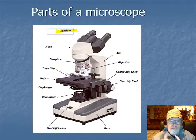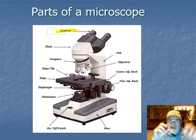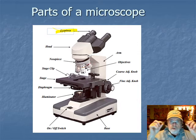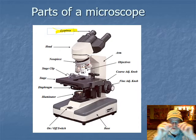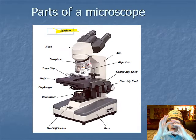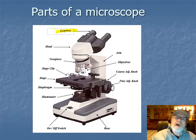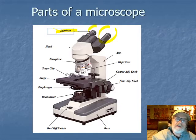The eyepieces can move back and forth to accommodate what's called the pupillary distance. Pupillary distance is the distance from the pupil on one eye to the pupil on the other. Most binocular microscopes have the ability to move the eyepieces to get your pupillary distance just right, so you have one single solid circular field of vision.